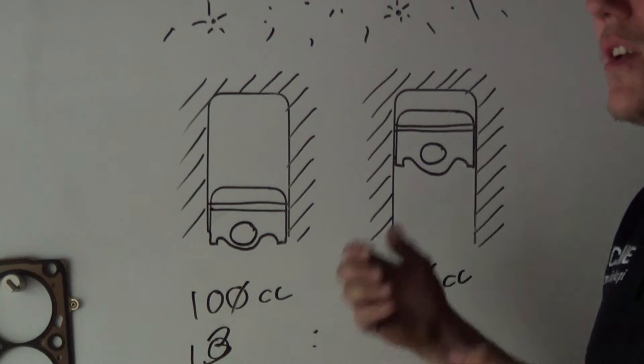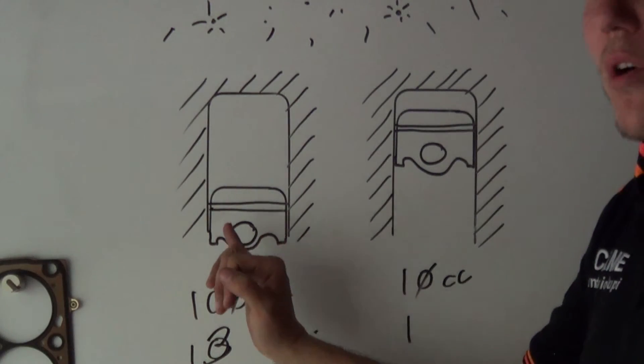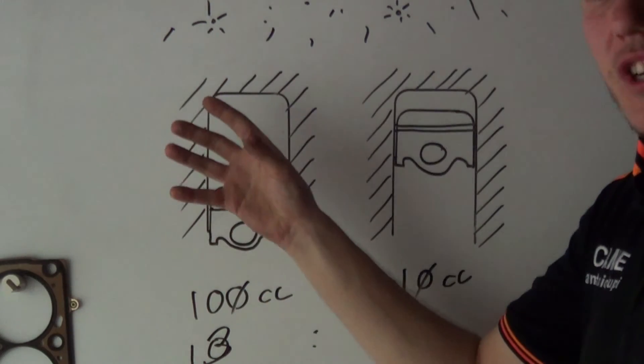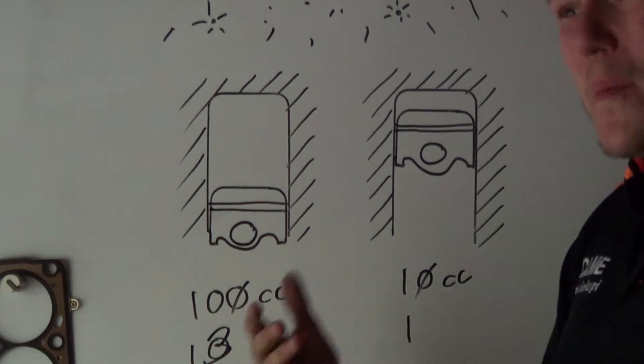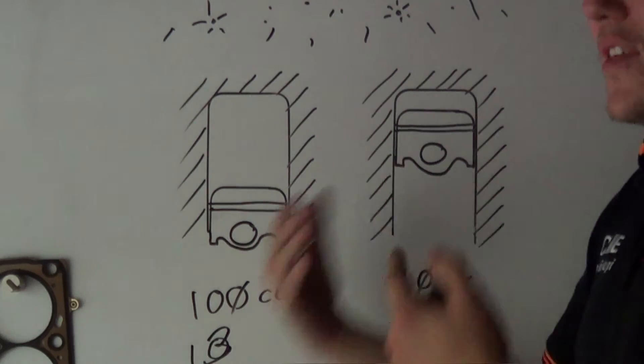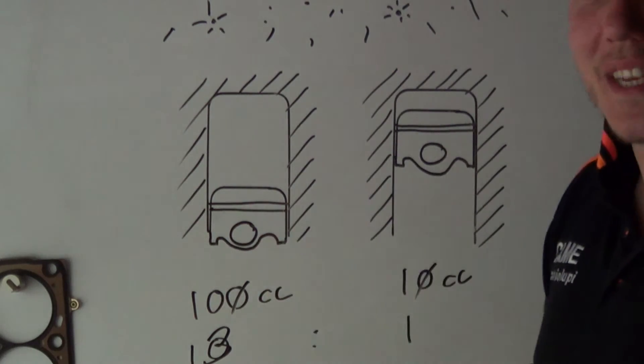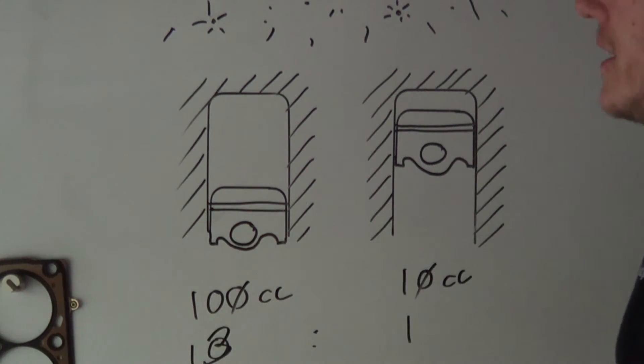And because it's pre-ignition, what can happen is the piston can be on its way on the upstroke and ignition occur, forcing the piston, or trying to force the piston, back down the way it came. And the thing that suffers in all this is the piston, it blows a hole in the top of it. So it is very important that these octanes are added to fuel.